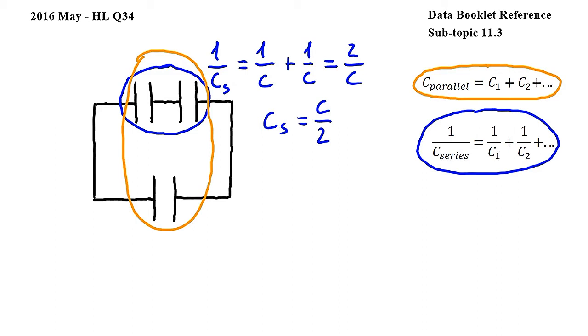So substituting into this equation we get C_P equals the combined capacitance of the two capacitors that we found above, so C over 2, plus the capacitance of the single capacitor in the bottom, so C, which equals 3 over 2 C, and the answer to this question then is C.